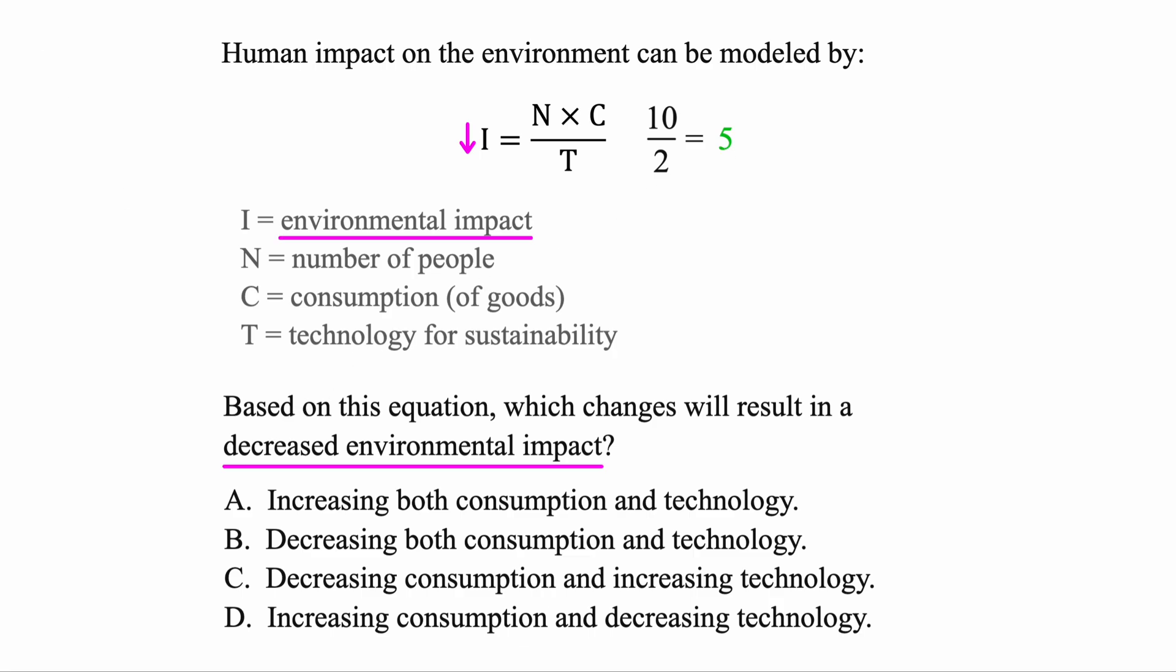So that tells us the environmental impact initially here is at a level 5. But how can we make it decrease? Well, there's two ways to make a fraction decrease. One of them is just to make the top number smaller.